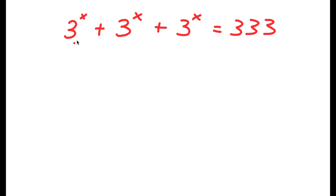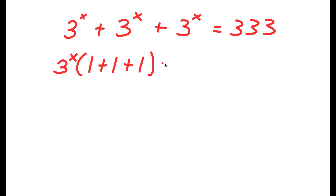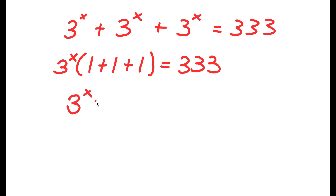In this problem, I have 3 to the power of x plus 3 to the power of x plus 3 to the power of x. The first thing I'm going to do is factor out 3 to the power of x from my left-hand side. So now I have 3 to the power of x times (1 plus 1 plus 1 plus 1) is equal to 333. Solving inside the parentheses: 1 plus 1 plus 1 plus 1 equals 3, wait — that gives 3 to the power of x times 3 equals 333.